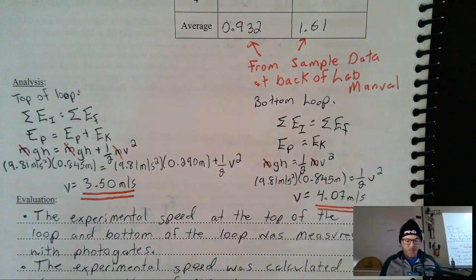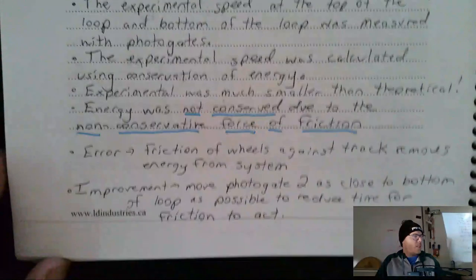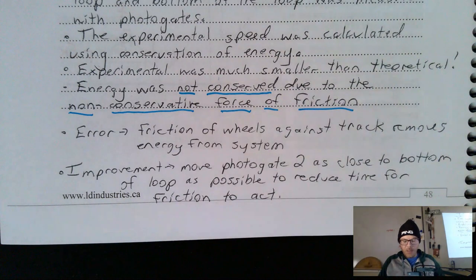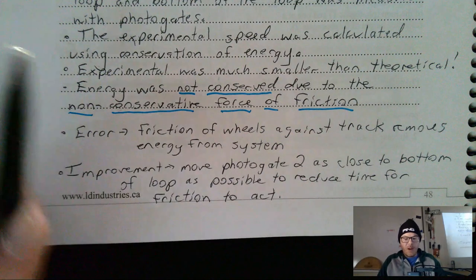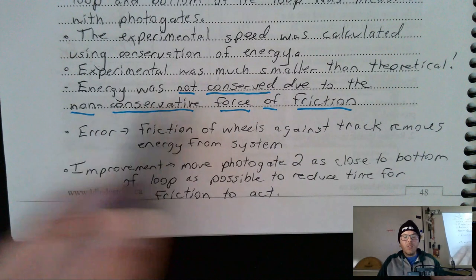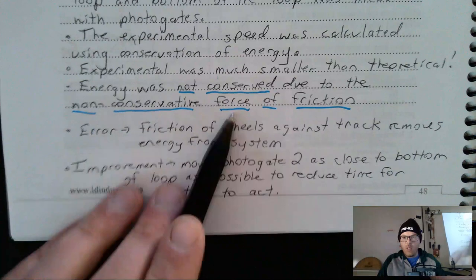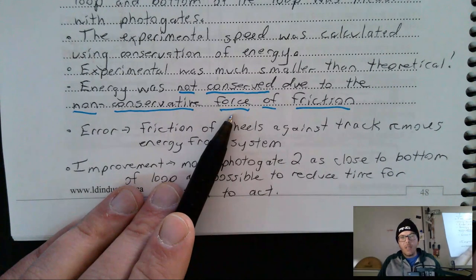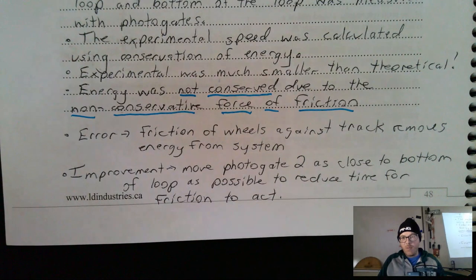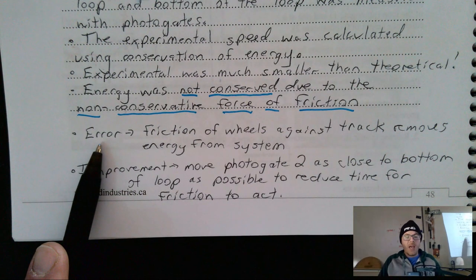In the evaluation, summarize what happened: the experimental and theoretical speeds are very different — the experimental was much smaller than the theoretical. The reason is that energy was not conserved, because non-conservative forces were acting. The major non-conservative force to identify in this lab is friction — the force of friction between the wheels and the track removes energy from the system by doing work on it. That's the main error everyone should know.